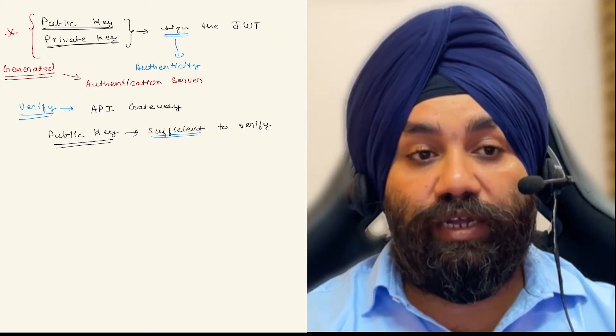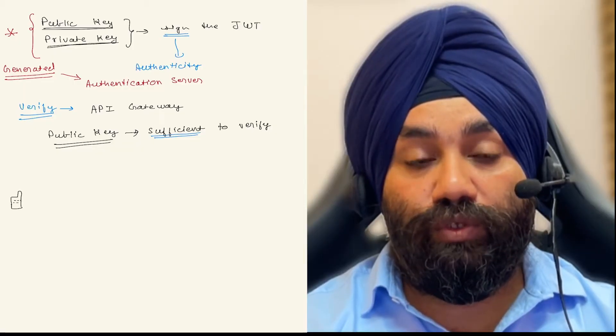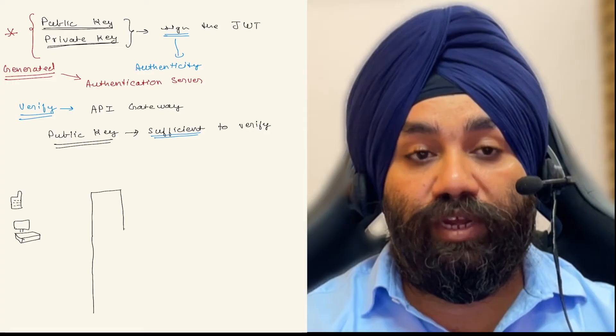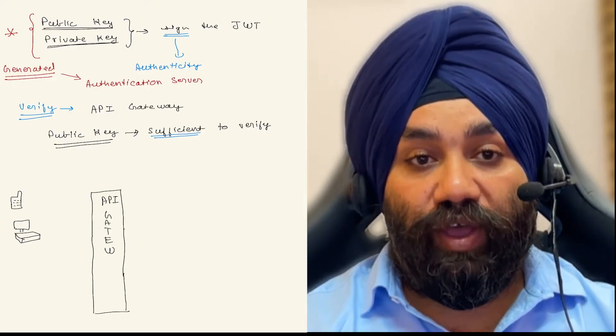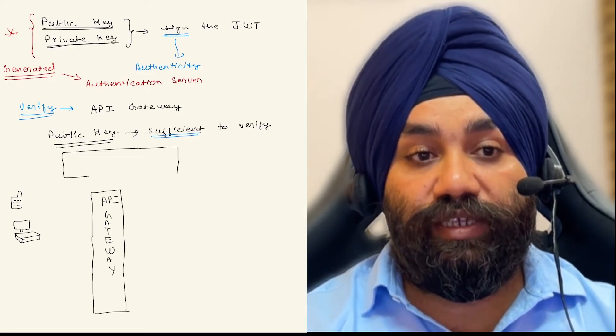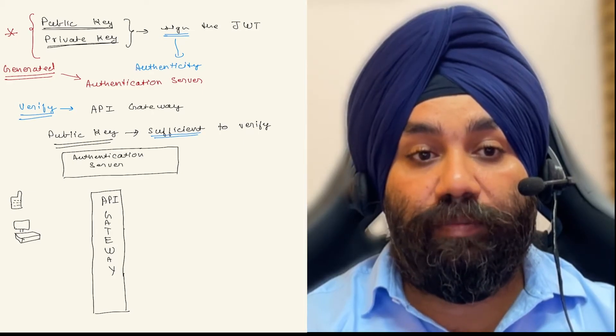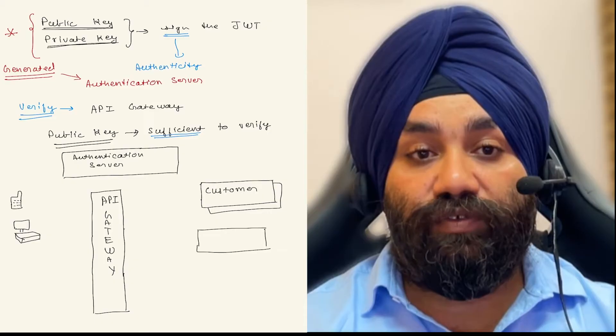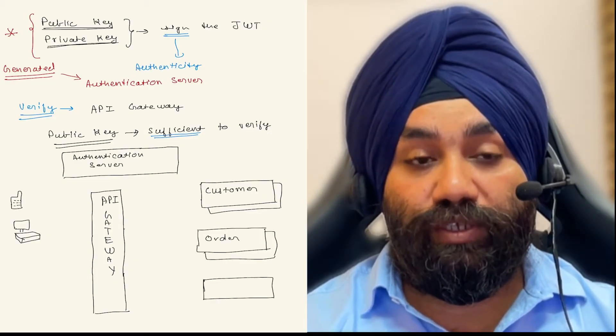Now let's try to understand how the request flows in a microservices environment and how is the JWT generated and verified. You can see in this diagram, we have our clients, we have our API gateway, we have our authentication server, and we have a set of services: customer, order and product service.